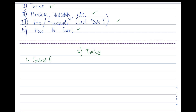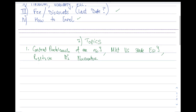We will begin with the basic concept of central problems of an economy. After that we will go to other basic topics such as market versus state economy and positive versus normative economics. After that we will go to the first important unit of this course, which will consist of consumer behavior. In this unit we will be covering all those topics which are important for this exam — for example, we will begin with the concept of utility, and then understand the meaning of cardinal versus ordinal utility.